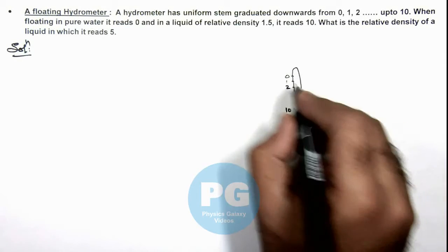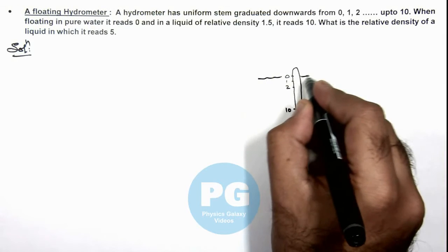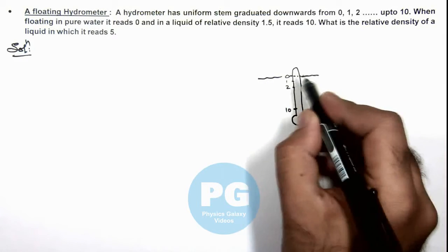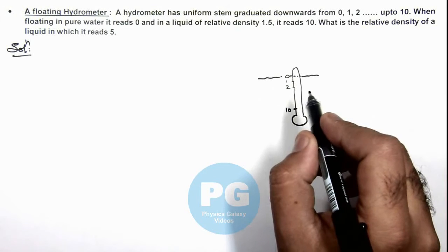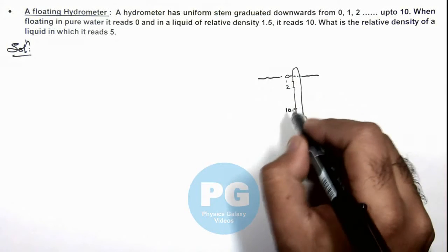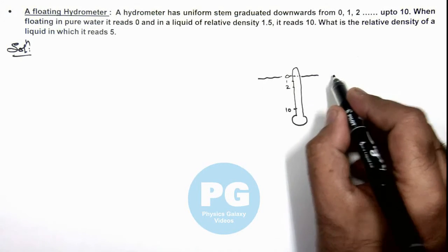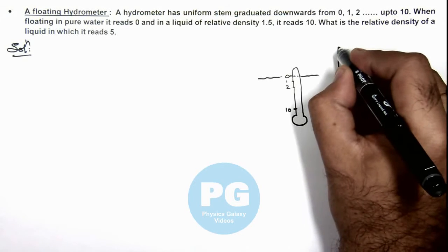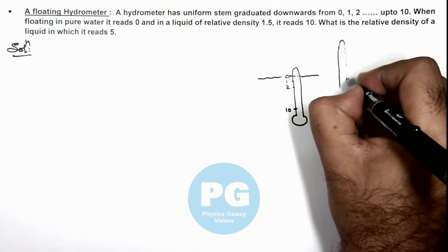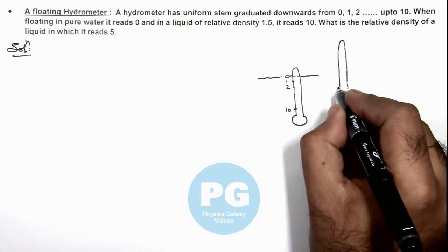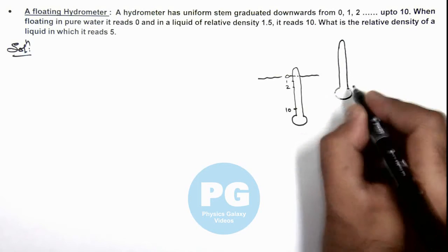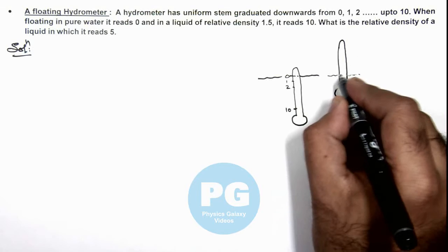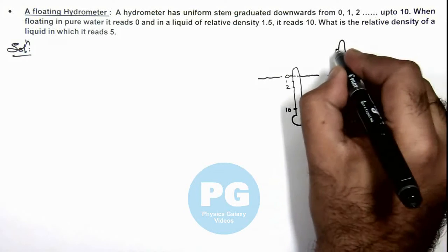When floating in water, it is given that it is reading zero, that means this mark of zero is at the water level when it is floating. When this hydrometer is placed in a liquid having density 1.5, it'll be reading 10. That means due to high density, the hydrometer stem will be extending outward and it is reading at mark 10, and here it is mark zero.